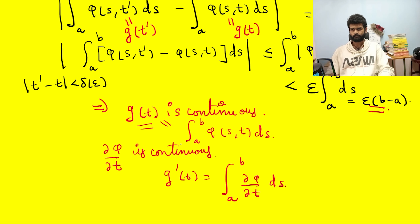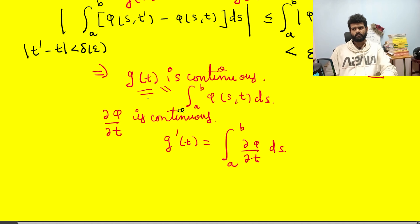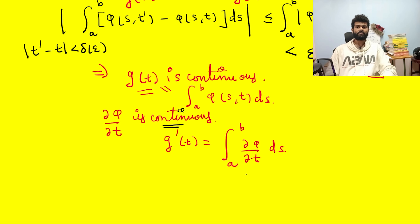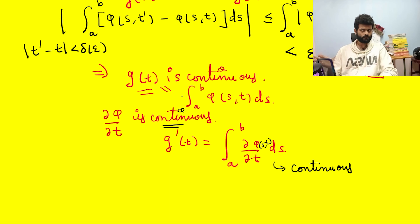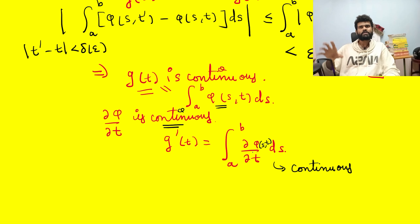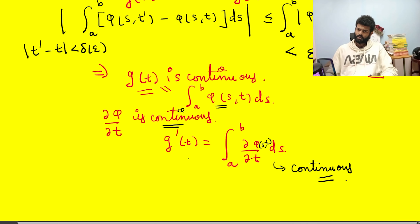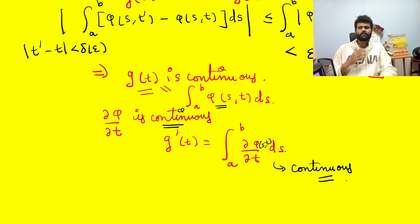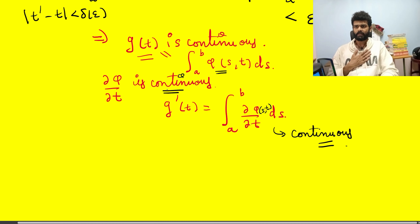If ∂φ/∂t is continuous, then the integral from a to b of ∂φ/∂t ds, which depends on t, is also continuous. This is clear from what we just proved: if you have a continuous two-variable function on a rectangle and integrate it with respect to the first variable, the result is again continuous. So ∂φ/∂t is a two-variable input function and it's continuous, so integrating it gives a continuous function. The only thing remaining is to prove that the derivative of g equals that integral.